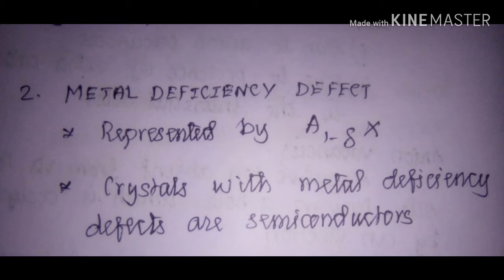The second major non-stoichiometric defect is the metal deficiency defect. In this defect, the number of metal atoms is lower than the number of cations. Because of metal deficiency defects, the molecular formula is represented differently — for example, for an AX crystal after metal deficiency defect, it is written as A₁₋δX, where delta is the fractional decrease in the number of metals. To maintain electroneutrality, one of the metals will have a higher oxidation state than usual.